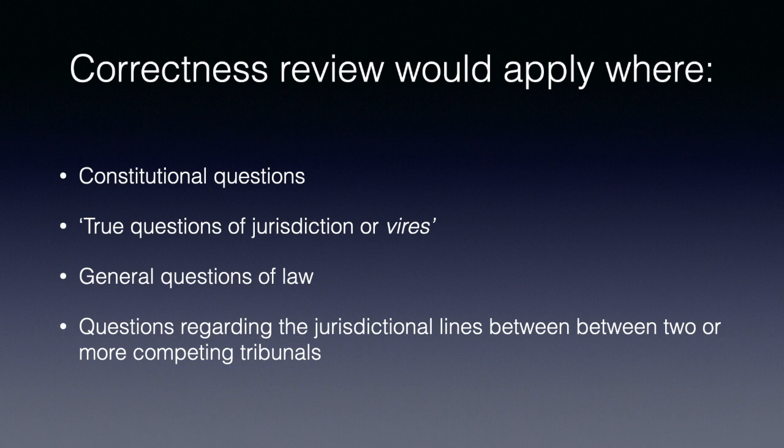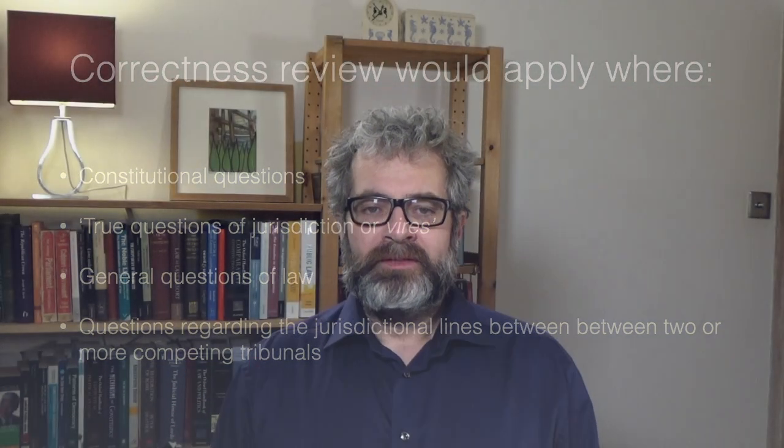Third, questions of general law continue to attract correctness review. A question of general law is defined as one that is both of central importance to the legal system as a whole and outside the adjudicator's specialised area of expertise. Finally, questions that relate to jurisdictional lines between two or more competing specialised tribunals, Dunsmuir confirmed, should be subject to correctness review. It is important to note that the majority in Dunsmuir did not envisage a standard of review analysis to be necessary in every case. Where existing case law already answered the question, it was not necessary to repeat the standard of review analysis.